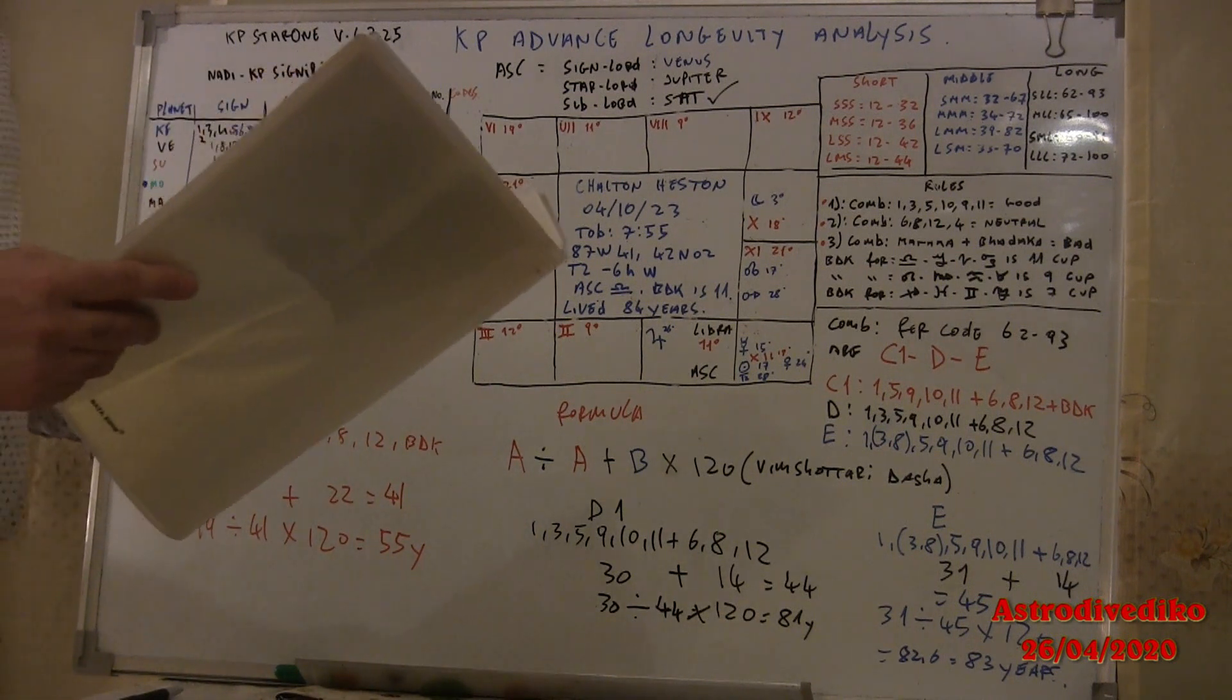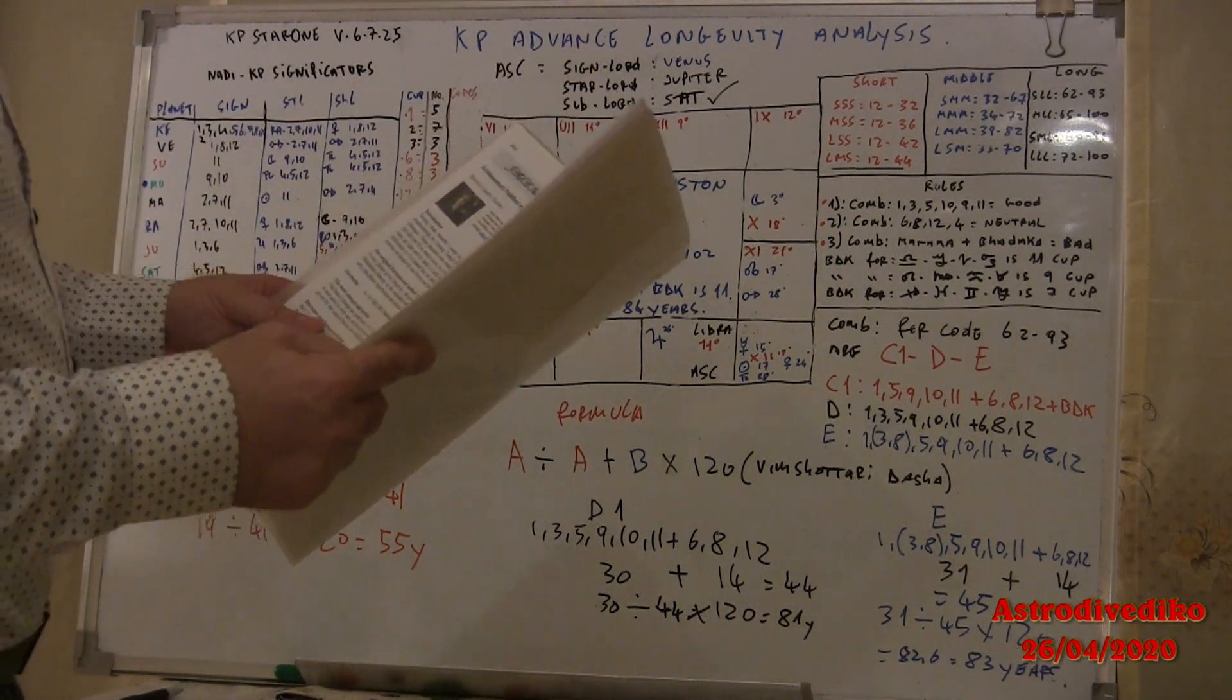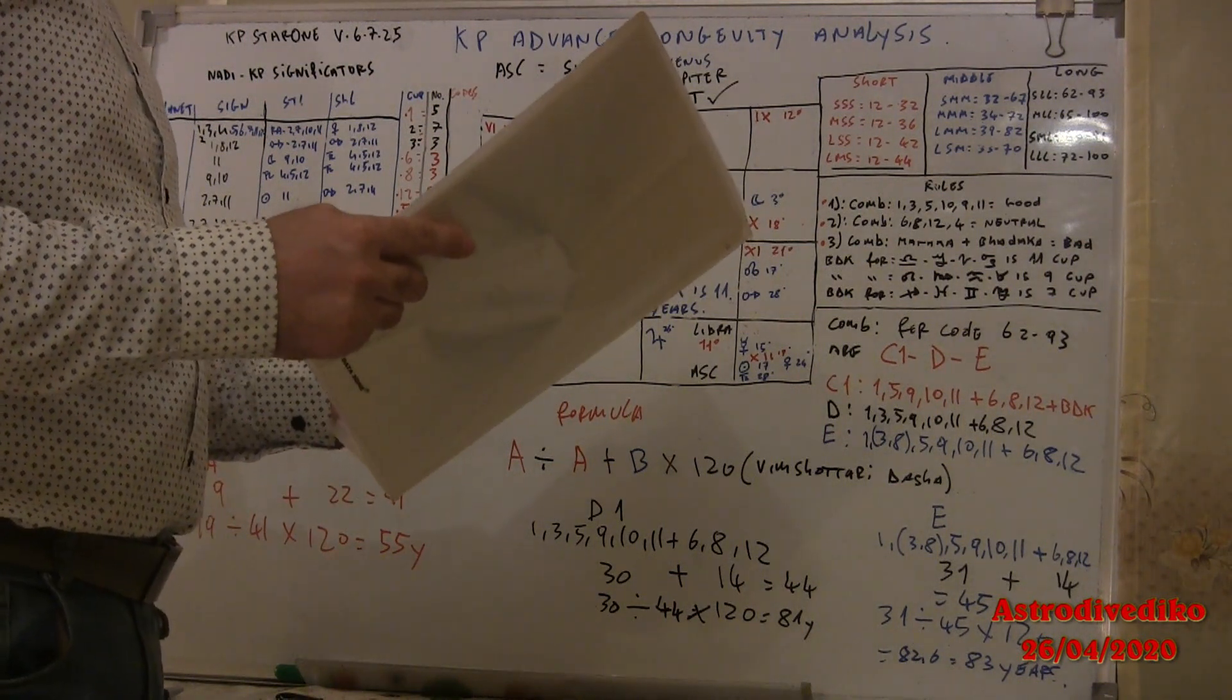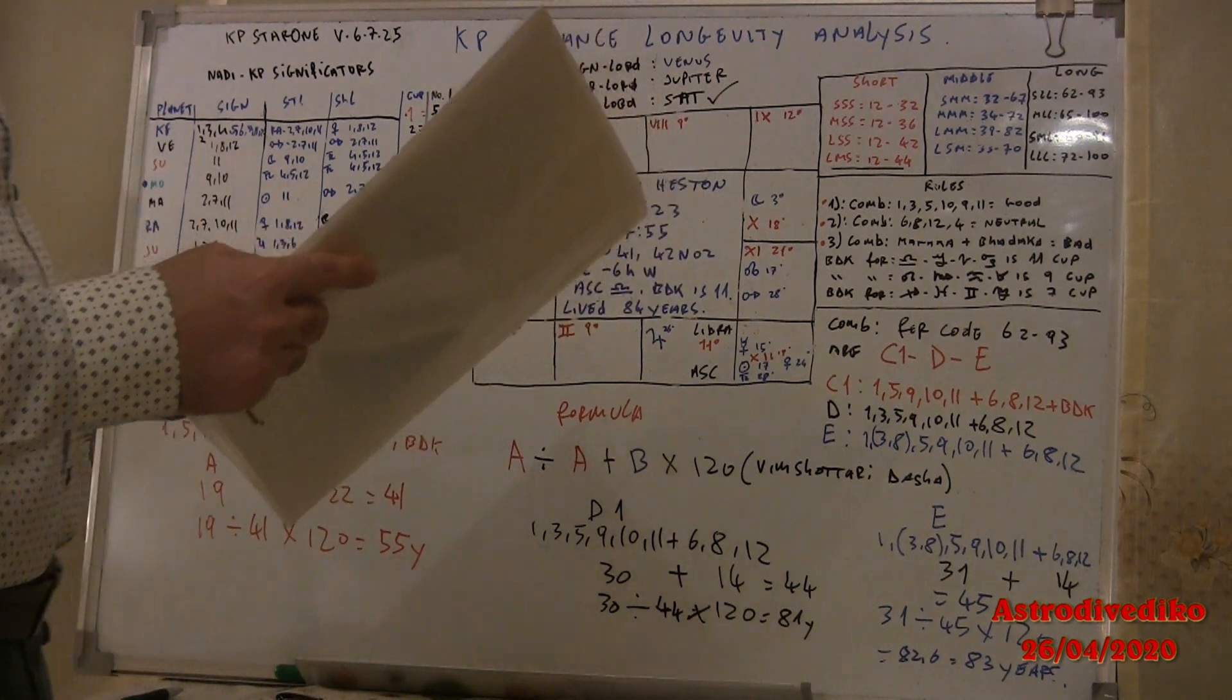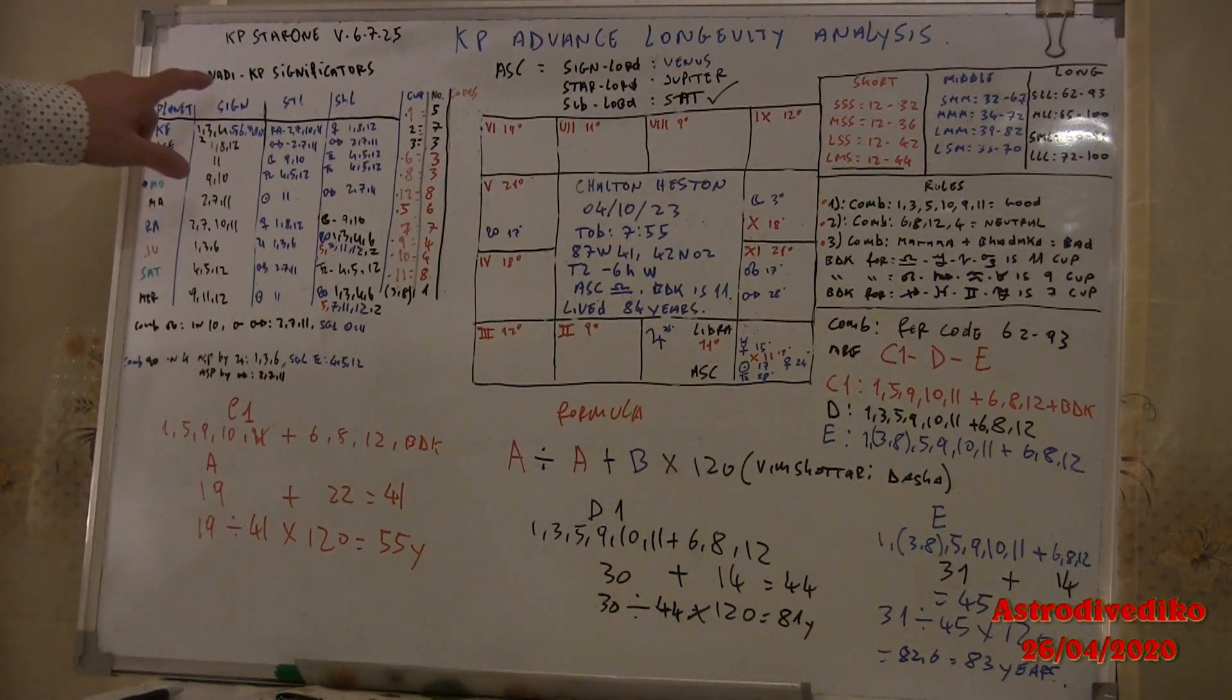Now the original formula in the book is every planet gives longevity. The good houses are 1, 5, 9, 10, 11 and the bad houses are 6, 8, 12, Maraca, but Badaga. In the calculation, the Maraca planets are not included in the formula and for the nodes only the planets in their sign are included, only the sign ones.